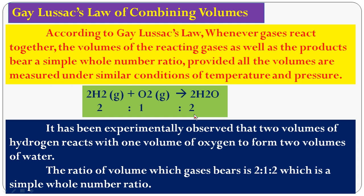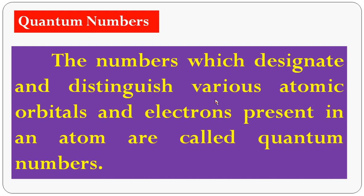This is how you state and verify Gay-Lussac's Law of Combining Volumes. Now come to the last topic of this lesson, quantum numbers. What are called quantum numbers? The numbers which designate and distinguish various atomic orbitals and electrons present in an atom are called quantum numbers. The numbers designate — meaning you give a name — and distinguish means you differentiate the various atomic orbitals: S, P, D, F.